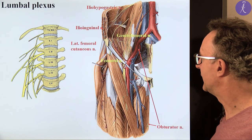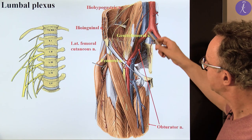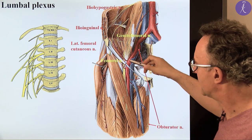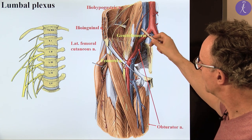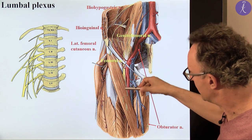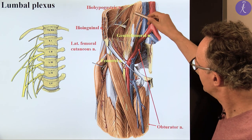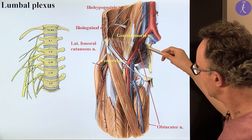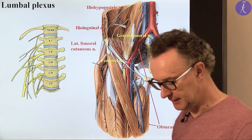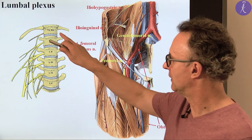We have nerves in this region. We studied the branches of the lumbar plexus in the first semester, and now we can see them from inside. Most are lateral to the psoas major — that is the landmark: the iliohypogastric, ilioinguinal, lateral femoral cutaneous, and femoral nerve. One — the genitofemoral nerve — pierces the psoas anteriorly. One is medial to the psoas major: the obturator nerve. Don't forget, the lumbar plexus is the fusion of the ventral rami of spinal nerves between the lower half of T12 and upper half of L4. Thank you very much for your attention.